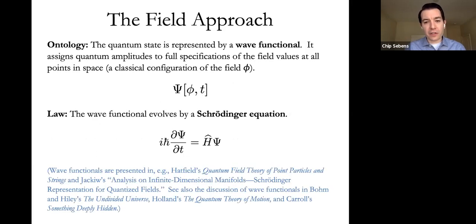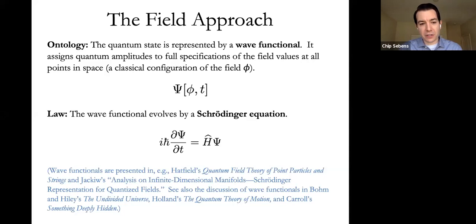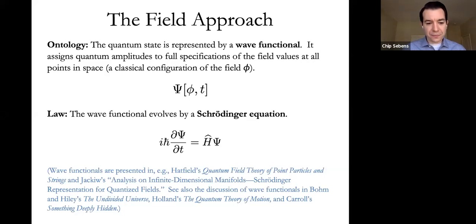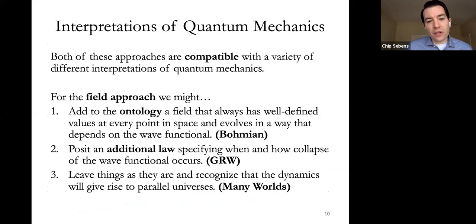In the field approach to quantum field theory, the quantum state is given by a wave functional. The wave functional takes in a classical field configuration—a statement of field values at each point in space—and returns a complex number. This wave functional evolves by a Schrödinger equation, sometimes called the functional Schrödinger equation.